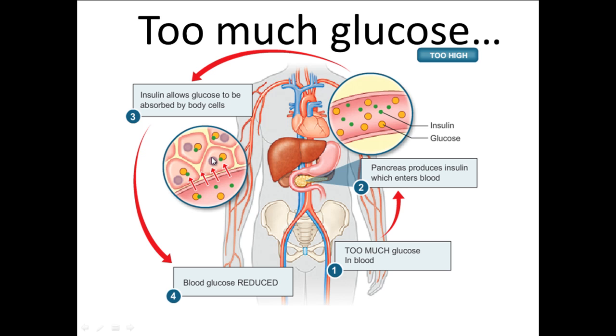Any excess glucose is then converted into glycogen by the liver. Therefore, blood glucose gets reduced.